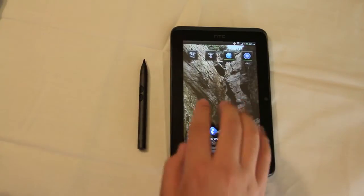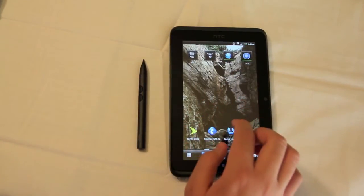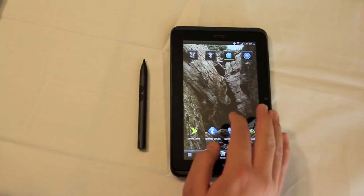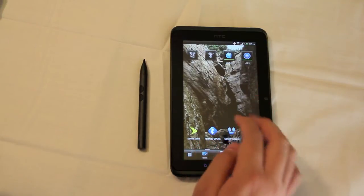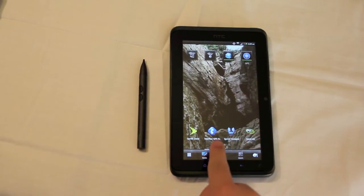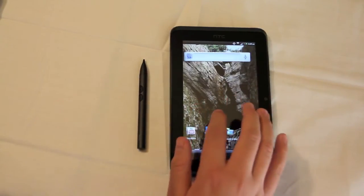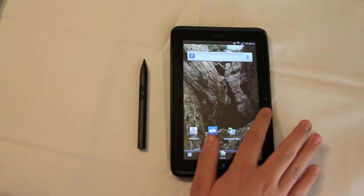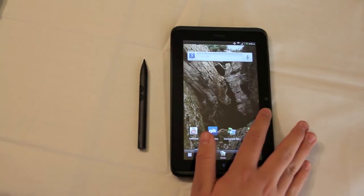This version also works with Sprint's 4G and 3G services, as I told you. And it also includes features such as GPS, Wi-Fi. You can use Google Navigator or the TeleNav feature from Sprint. On the front, we have a 1.3 megapixel camera, and on the back, we have a 5 megapixel camera.